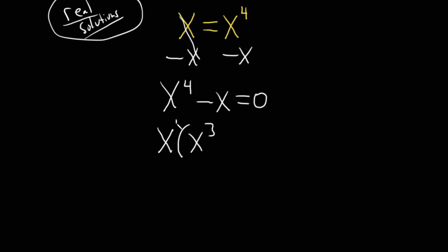Right this is really an x to the 1. So when you multiply these you add the exponents. 1 plus 3 is 4. Then minus, and then what do you multiply by x in order to get negative x? Just minus 1. And that's equal to 0.